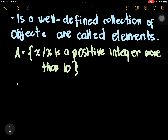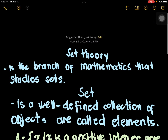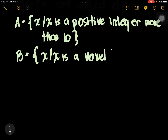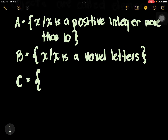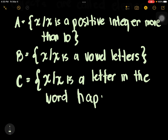Let's have another one. We have set B. A set is always enclosed with braces: x such that x is a vowel letter. This is an example. And then set C: x such that x is a letter in the word happy. So these are examples of sets.